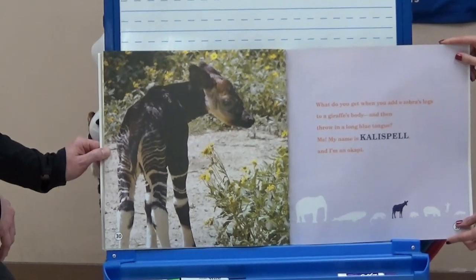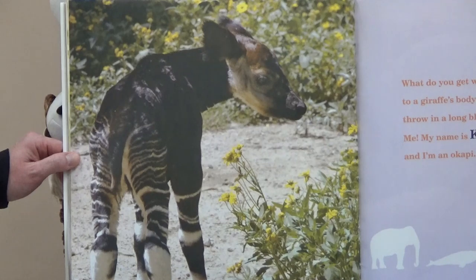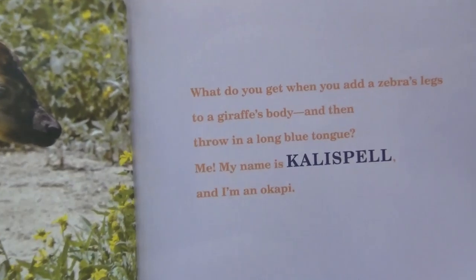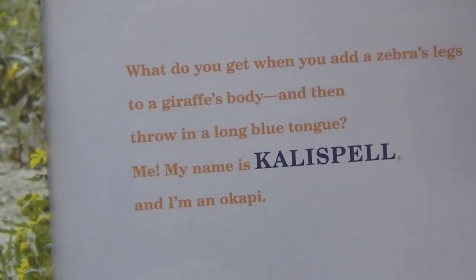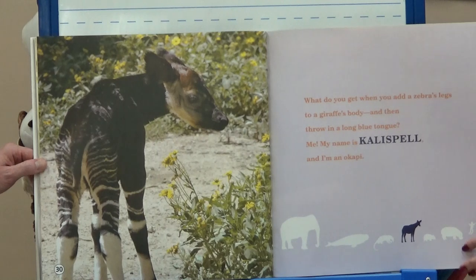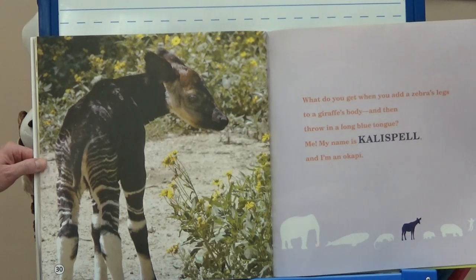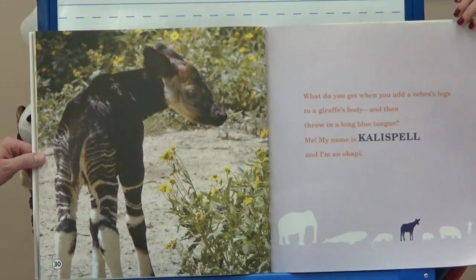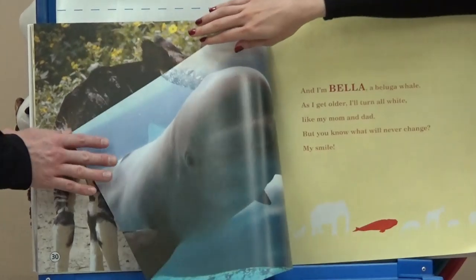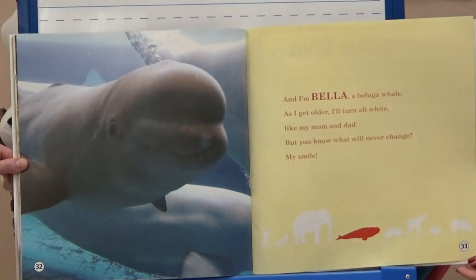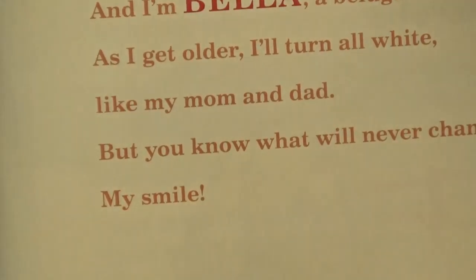'What do you get when you add a zebra's legs to a giant giraffe's body and then throw in a long blue tongue? Me — my name is Callie Spell, and I'm an okapi.' So is this animal a zebra? No. Is this animal a giraffe? No. It's a different animal called an okapi. It has the zebra's stripes but a giraffe's body. 'I'm Bella, a beluga whale. As I get older, I'll turn all white, like my mom and dad. But do you know what will never change? My smile.' We know that when it gets older it will turn white — that's a detail about our beluga whale.